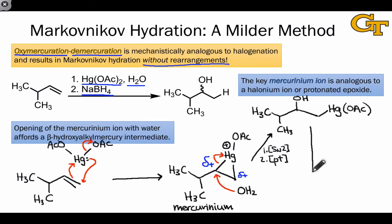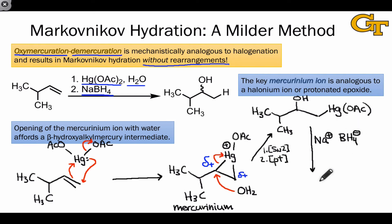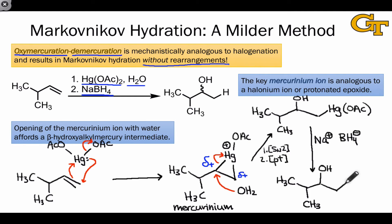The purpose of the second stage, which involves treatment with sodium borohydride — best envisioned as Na⁺ along with the anion BH₄⁻ — is to replace that mercury group with hydrogen. The final product is the Markovnikov, or more substituted, alcohol, and contains a new bond to hydrogen at the other carbon of the original starting alkene.